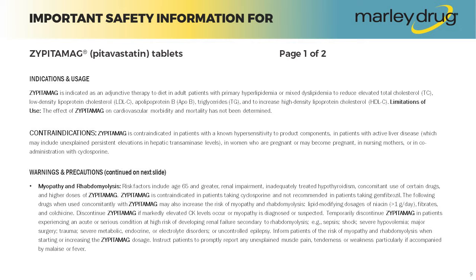Warnings and precautions — Myopathy and rhabdomyolysis: Risk factors include age 65 and greater, renal impairment, inadequately treated hypothyroidism, concomitant use of certain drugs, and higher doses of Zipitamag. Zipitamag is contraindicated in patients taking cyclosporine and not recommended in patients taking gemfibrozil. The following drugs, when used concomitantly with Zipitamag, may also increase the risk of myopathy and rhabdomyolysis: lipid-modifying dosages of niacin of greater than one gram per day, fibrates and colchicine. Discontinue Zipitamag if markedly elevated CK levels occur or myopathy is diagnosed or suspected.